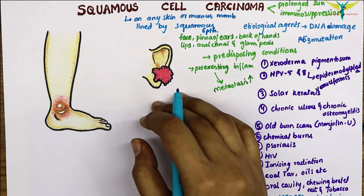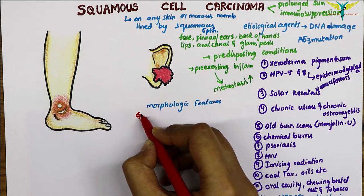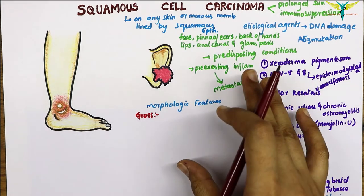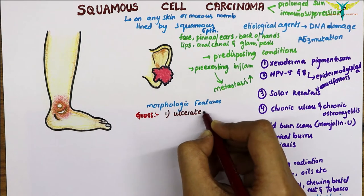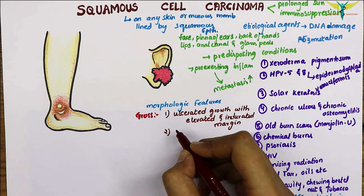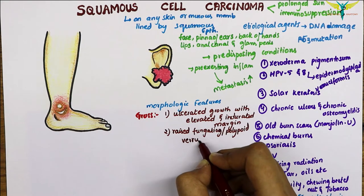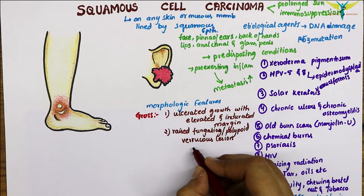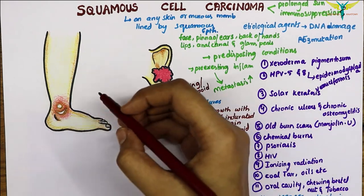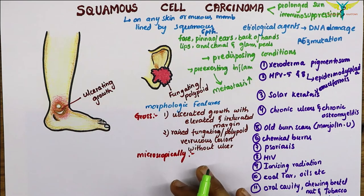Cutaneous squamous cell carcinoma arising in pre-existing inflammatory and degenerative lesions has a higher incidence of developing metastasis. Grossly, squamous cell carcinoma of the skin and squamous-lined mucosa have two patterns: the first is an ulcerated growth with elevated and indurated margins, and the second — less commonly seen — is a raised fungating or polypoid lesion found without ulceration.